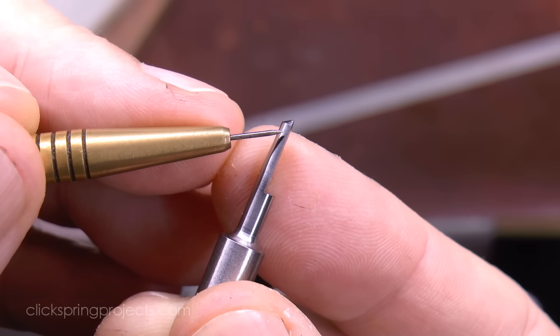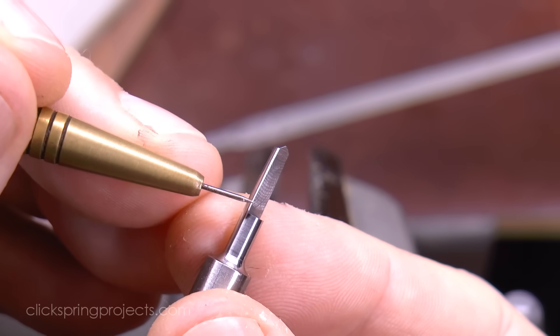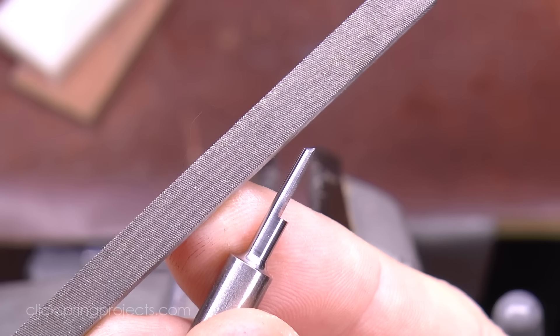Now this relief could be machined, but I'd like to be sure to not disturb that sliver of metal for the land, so a few strokes with the file is a controlled way to get the required result.